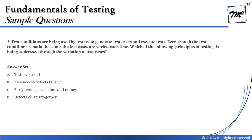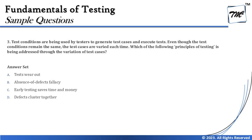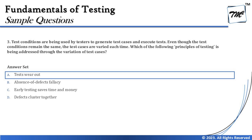The options are: tests wear out, absence of defect fallacy, early testing saves time and money, and defects cluster together. With that understanding of the principles, you should be able to conclude your answer very quickly. The right answer to this question is A — 'tests wear out' — because the principle is telling us that we are revising our test cases every time we run them.